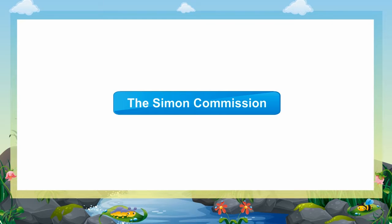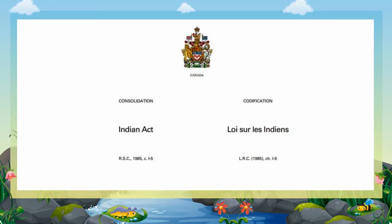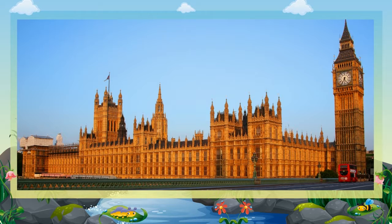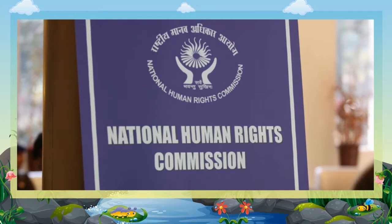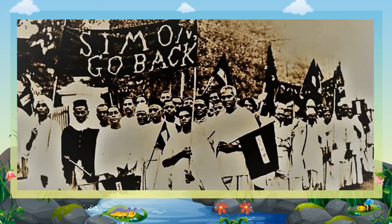Simon Commission: The Non-Cooperation Movement had failed. In 1927, the British government wanted a report on political reforms in India and on amending the Government of India Act, so it appointed a commission. The commission consisted of Sir John Simon and six other members, all of whom were members of the British Parliament. There was no Indian as a member. The commission was an insult to the Indians. The people of India rose as one against this step. Under Lala Lajpat Rai's leadership, it was resolved to boycott the Simon Commission. The Indians showed black flags and shouted 'Simon Go Back.'